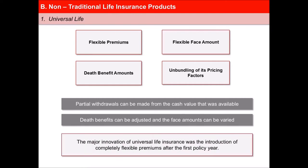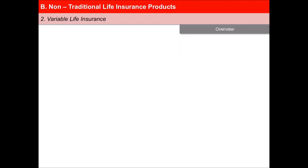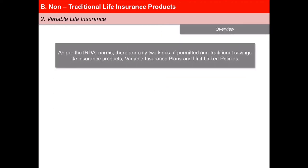The major innovation in universal life insurance was the introduction of completely flexible premiums after the first policy year. In India, as per the IRDAI norms, there are only two kinds of permitted non-traditional savings life insurance products. First are variable insurance plans and second are unit-linked policies.